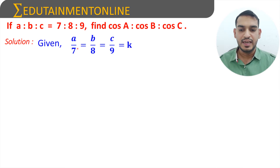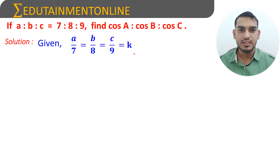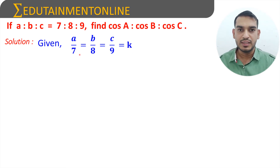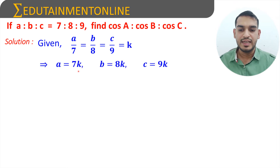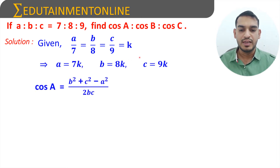We can take it as A/7 = B/8 = C/9 = some constant k. Transposing the denominators, we can write A = 7k, B = 8k, and C = 9k.